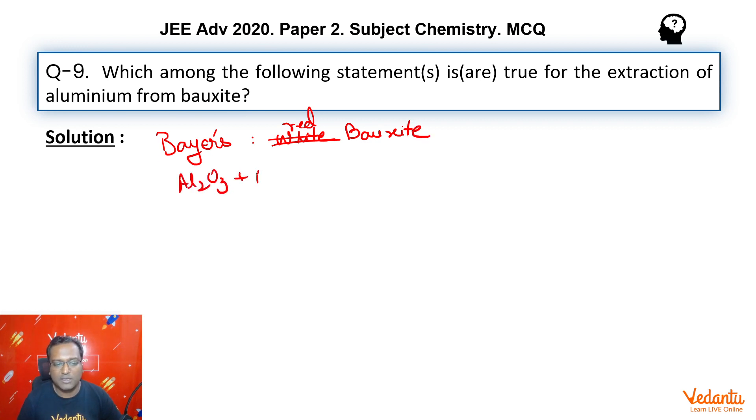Red bauxite contains Al2O3 with impurities of Fe2O3 and TiO2 - these are basic oxides and this is an amphoteric oxide. So what we do is dissolve it in NaOH solution. NaOH dissolves Al2O3, being amphoteric, forming NaAlO2.